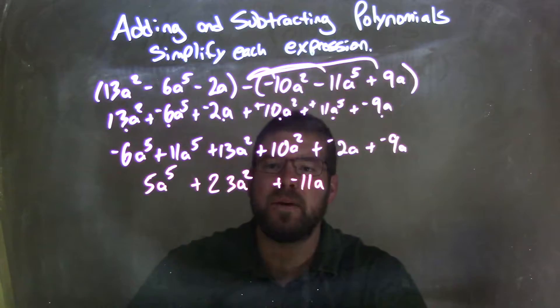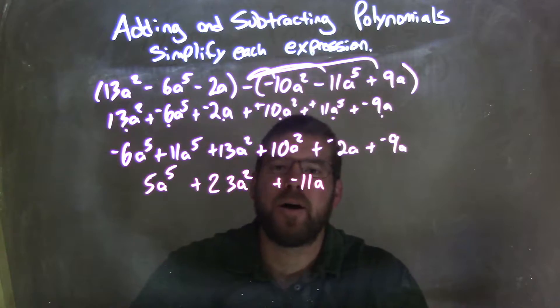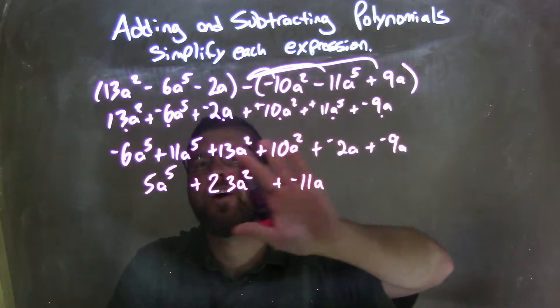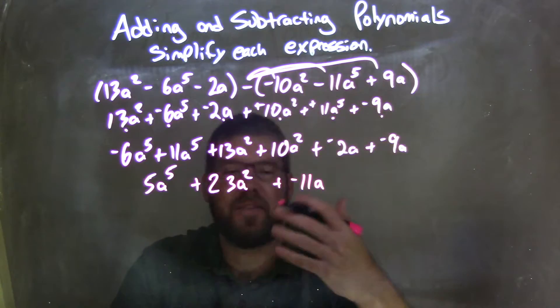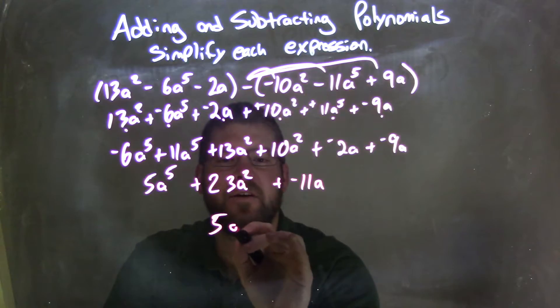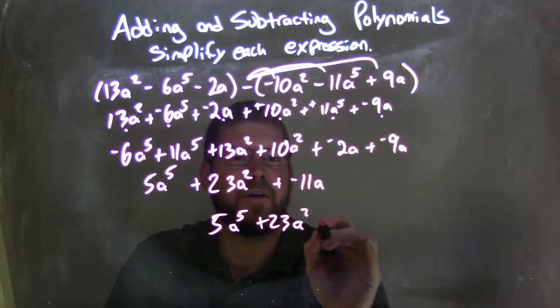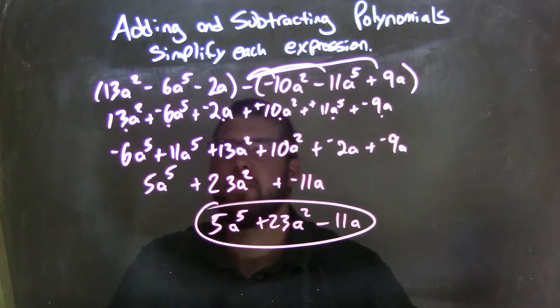Now I'm going to rewrite this. Instead of adding a negative for my final answer, I'd like to have a subtraction sign. I find it easier to solve when it's adding a negative, and then I'll simplify it, and then at the end, I'd like to make it back to the subtraction because it looks nicer. So we have 5a to the 5th, plus 23a squared minus 11a, and there we go. Now our final answer.